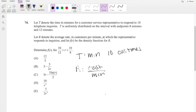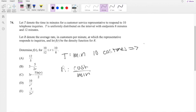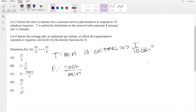We have to find the relationship between T and R. If it takes T total minutes to respond to 10 customers, we know that this is equivalent to saying T over 10 customers equals minutes, right?